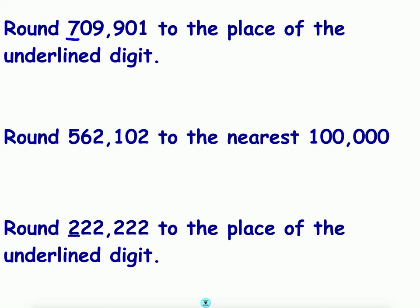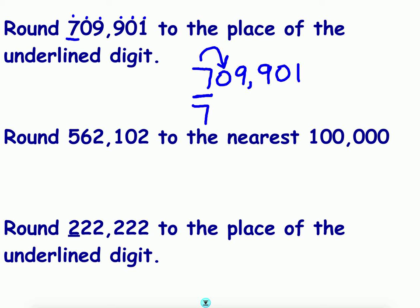Next example: round to the nearest hundred thousand using the underlined digit. Looking at the place value positions — ones, tens, hundreds, thousands, ten thousands, hundred thousands — we are rounding to the nearest hundred thousand. Find your place, look next door. Five or more? No. Four or less? Yes — let it rest. The underlined digit stays. Look to the right, there are zeros in sight — one, two, three, four, five.